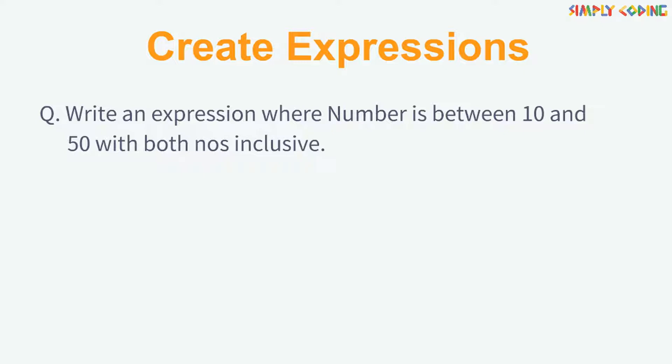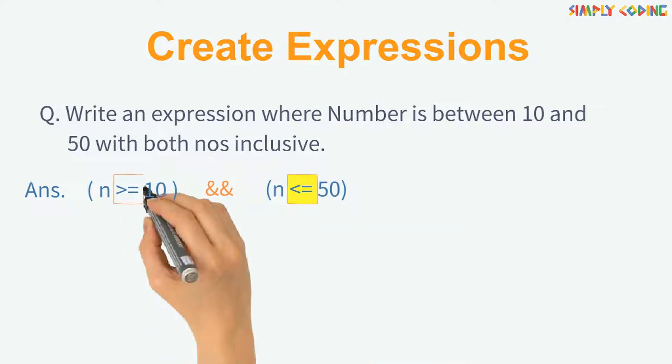Let's see another example. Write an expression where number is between 10 and 50 with both numbers inclusive. For a number to be in between a range, it has to be greater than 10 and less than 50. Here, since both numbers are inclusive, we will use less than or equal to and greater than or equal to operators.